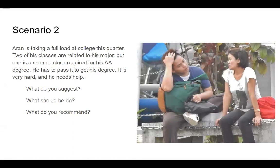Scenario 2: Arun is taking a full load at college this quarter. Two of his classes are related to his major, but one is a science class required for his AA degree. He has to pass it to get his degree, and it is very hard — he needs help. What do you suggest? What do you recommend? Pause this video to think of your answer, and when you are ready, continue to the next slide.